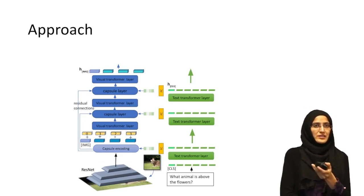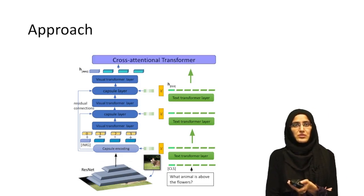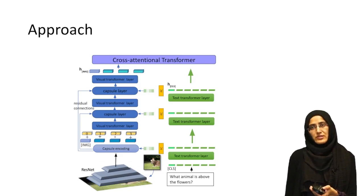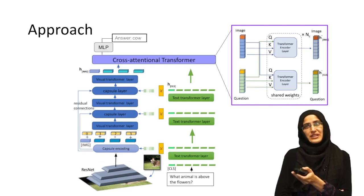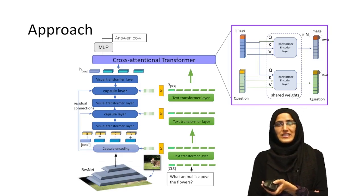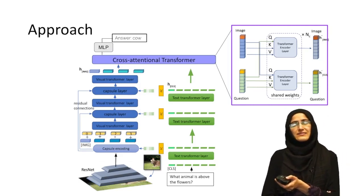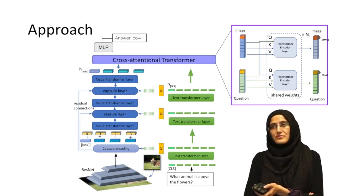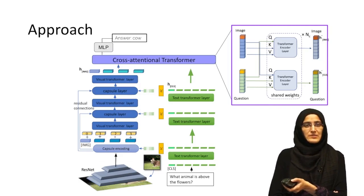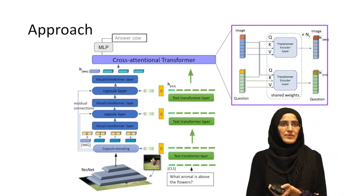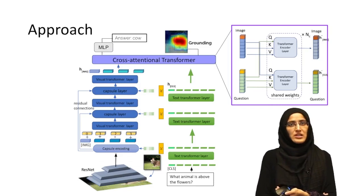From the visual encoder we take the visual feature outputs, and from the text encoder we have text feature outputs. These features go as input to a cross-attentional transformer, which is a co-attentional transformer block with two modalities — image and question. The transformer encoder layer takes queries from one modality and keys and values from the other. The feature outputs after cross-attention — H-prime image and H-prime CLS — are concatenated and passed through an MLP to predict the answer. The self-attention weights from the visual side of the cross-attentional block give us the grounding output.